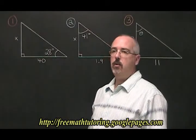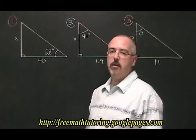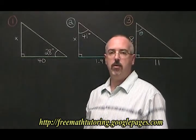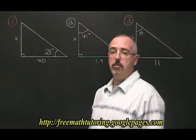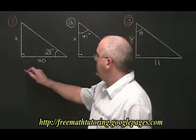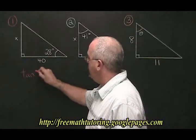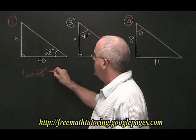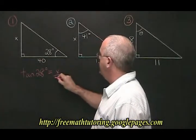In example one, we have a 28 degree angle with an adjacent side that is equal to 40, and we want to know the length of the opposite side. We fill in our TOA formula like this. TAN of 28 degrees is equal to opposite over adjacent.